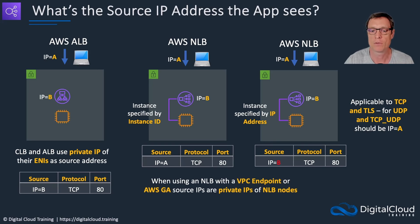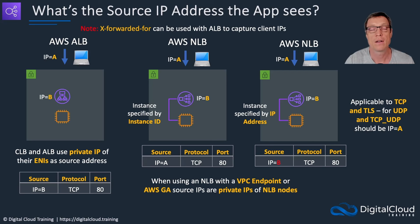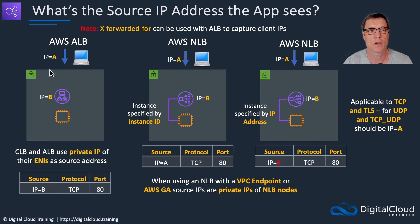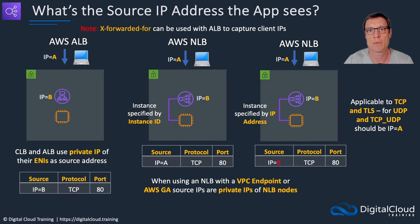When using an NLB with a VPC endpoint or Global Accelerator, the source IP addresses are the private IPs of the NLB nodes. Lastly, X-Forwarded-For can be used with the ALB to capture client IPs. X-Forwarded-For is a type of HTTP header — if we enable that header in our application, we will be able to capture those client IP addresses. They are present in the IP protocol information being sent through, but we need to enable this specific header.